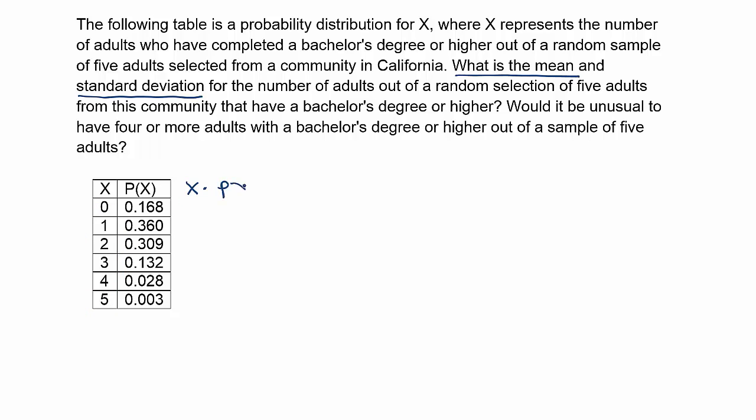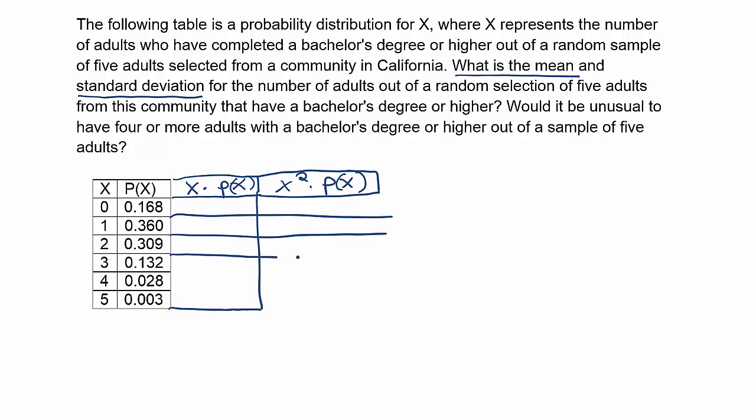The first would be x times P(x). We're going to need to figure out that column. Then we're going to need to do the column x squared times P(x), right? So the column notation is going to tell you what has to be performed. So we're going to need to multiply all the x values times the corresponding P(x) values. And then we're going to need to do the same thing, but square the x's before doing the multiplication. And that'll give us the two columns we need to perform the calculations at the end.